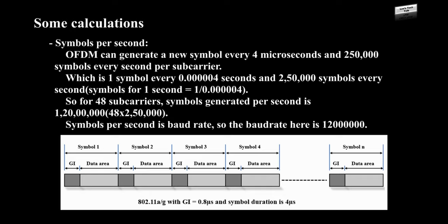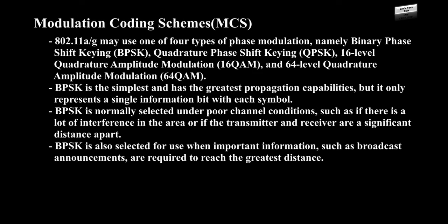Symbols per second: OFDM can generate a new symbol every 4 microseconds, which is 250,000 symbols per second per subcarrier. Symbols per second = 1 ÷ 4 microseconds. So for 48 subcarriers, symbols generated per second is 12,000,000, which is 48 subcarriers multiplied by 250,000. Symbols per second is baud rate, so the baud rate here is 12 megabaud.